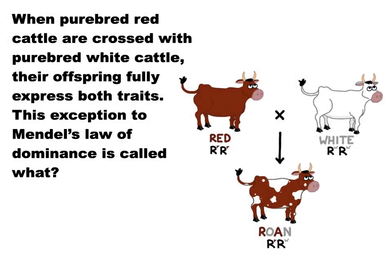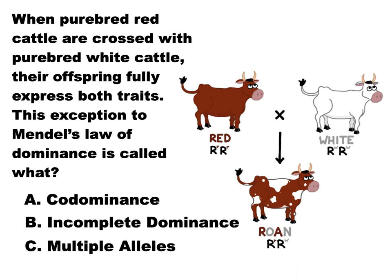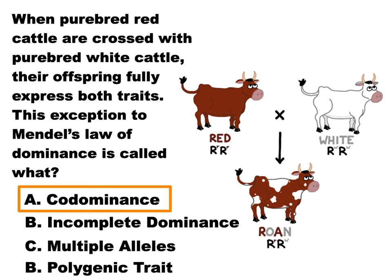Class question: if we cross purebred red cattle with purebred white cattle and their offspring fully express both traits, which exception to Mendel would that be? The answer is co-dominance — because both are dominant, you get speckles. If it were incomplete dominance, you'd get a blend — pink cows. If it were polygenic, there'd be a whole range of different colors. If it were multiple allelic, there might be three or four more versions you could get.